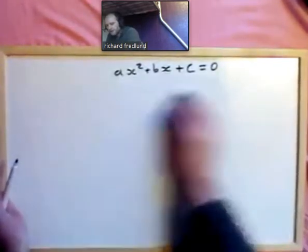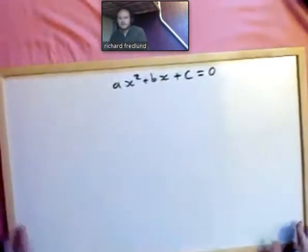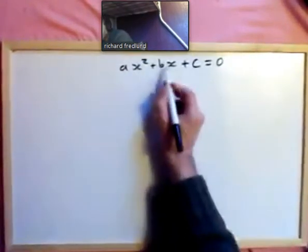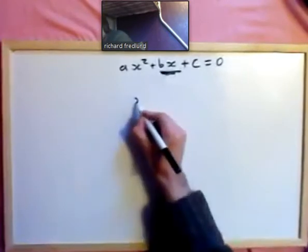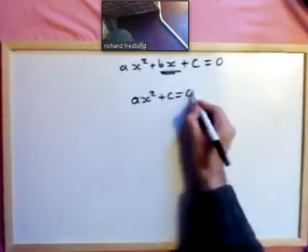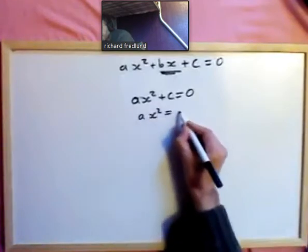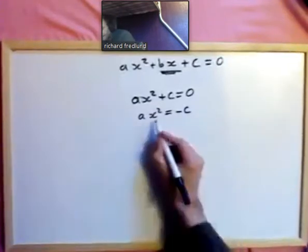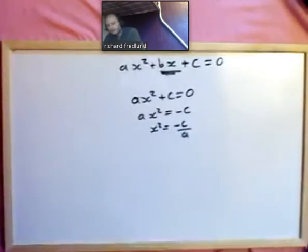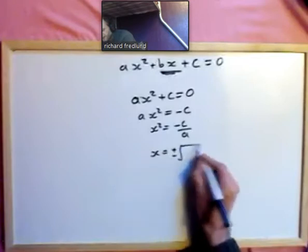If we didn't have the b term, we could solve it. For ax squared plus c equals 0, we subtract and get ax squared equals minus c, then x squared equals minus c over a, so x equals plus or minus the square root of minus c over a.